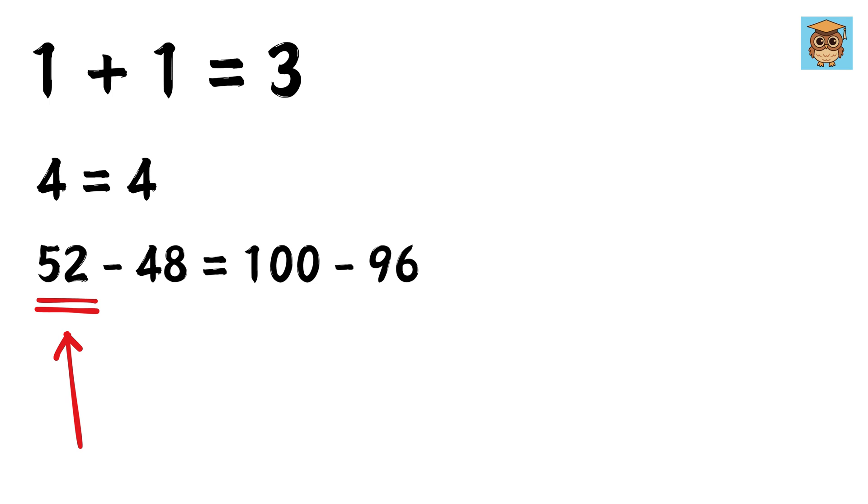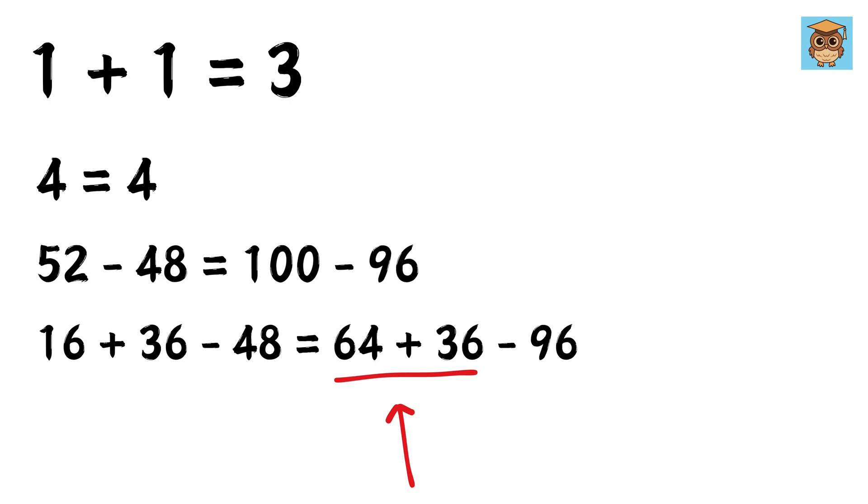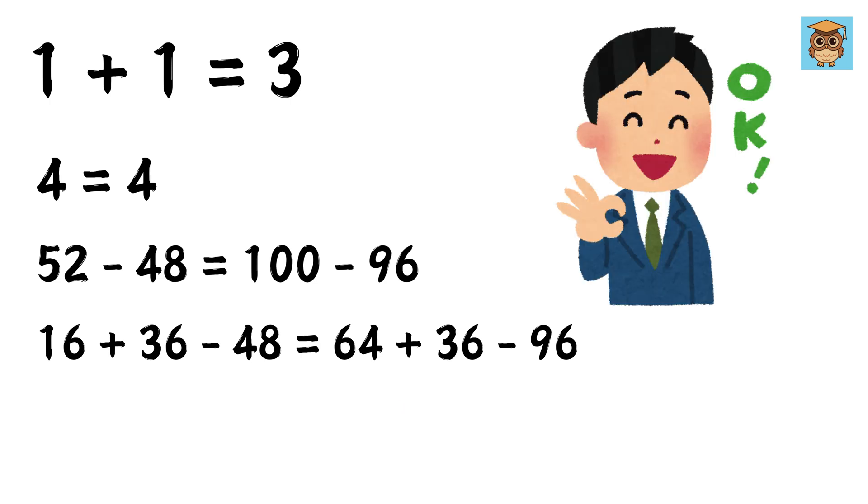Now I can rewrite this 52 as 16 plus 36, right? Also, I can rewrite this 100 as 64 plus 36, right? No problem till now.